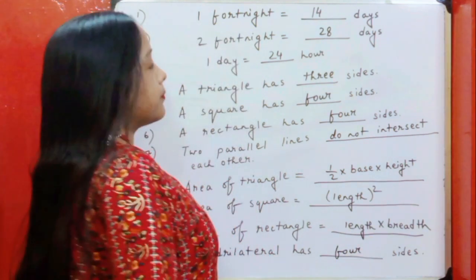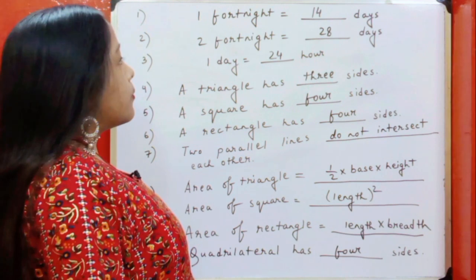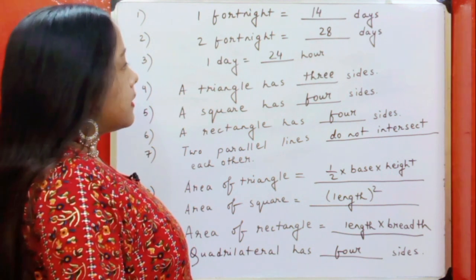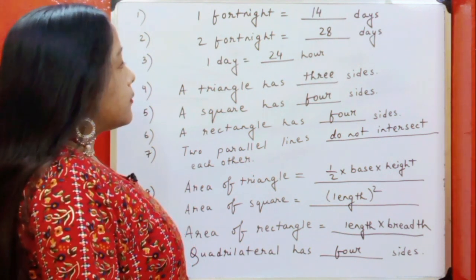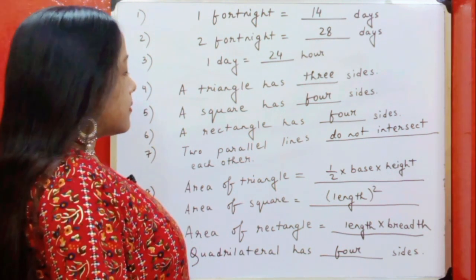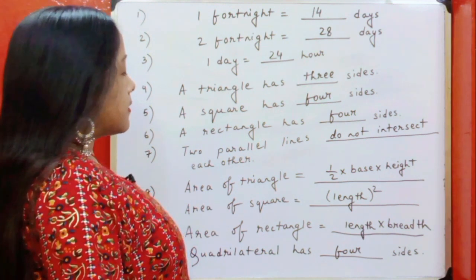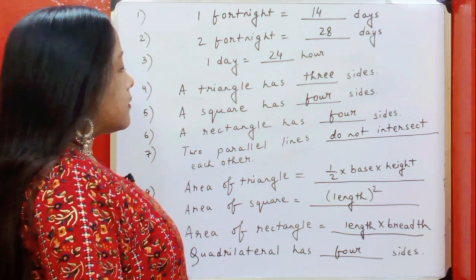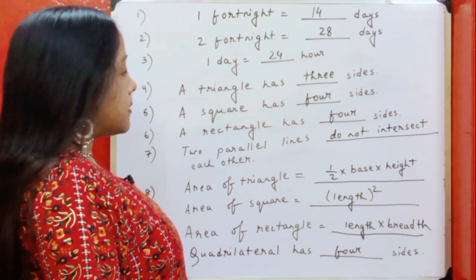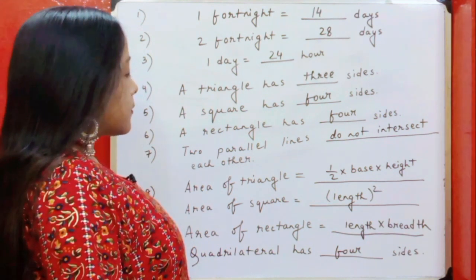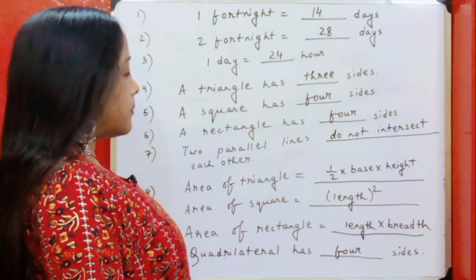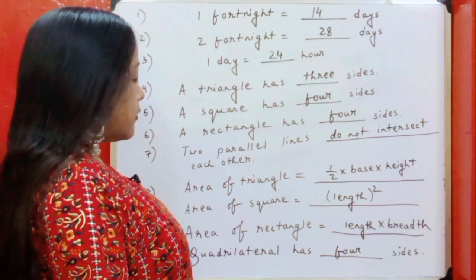Let's revise. One fortnight is equal to 14 days. Two fortnight is equal to 28 days. One day is equal to 24 hours. A triangle has three sides. A square has four sides. A rectangle has four sides. Two parallel lines do not intersect each other. Area of triangle is equal to half multiplied by base multiplied by height. Area of square is equal to square of length. Area of rectangle is equal to length multiplied by breadth. Quadrilateral has four sides.